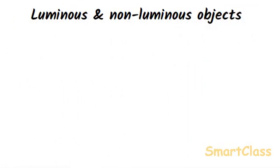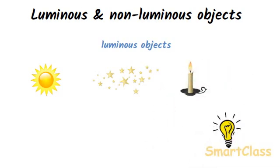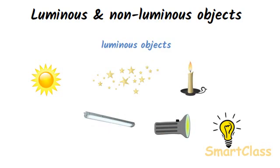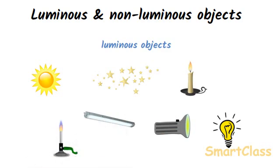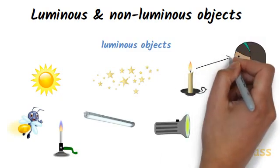An object which gives out its own light is called a luminous object. The sun, other stars, burning candle, lighted electric bulb, lighted torch, glowing tube light, the flame of a gas burner, and firefly are all luminous objects. This is because they give out their own light. The luminous objects are in fact the sources of light. Luminous objects can be seen even in the dark as they give out their own light. A luminous object can be seen because the light given out by it enters our eyes.